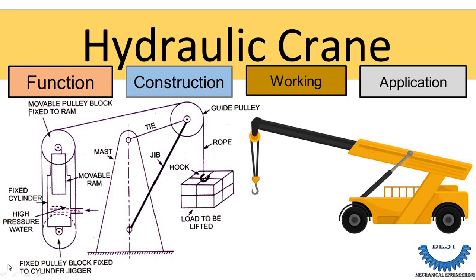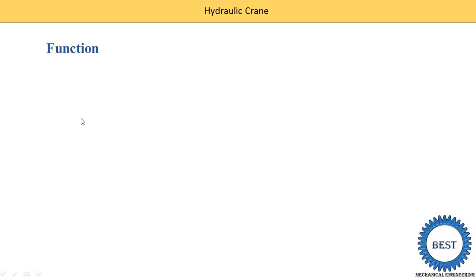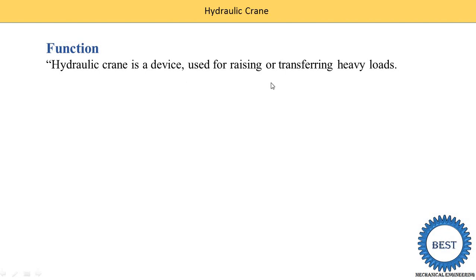You all know the hydraulic crane in day-to-day life. In this video, I teach you its various components and its working — how it works. Let's move towards the function. The function of the hydraulic crane: the crane is used to lift heavy weight. A hydraulic crane is a device used for raising or transferring heavy loads. It is used for transferring heavy machineries in industries, in different workshops, for transferring raw materials and final products. That is related to the mechanical side.